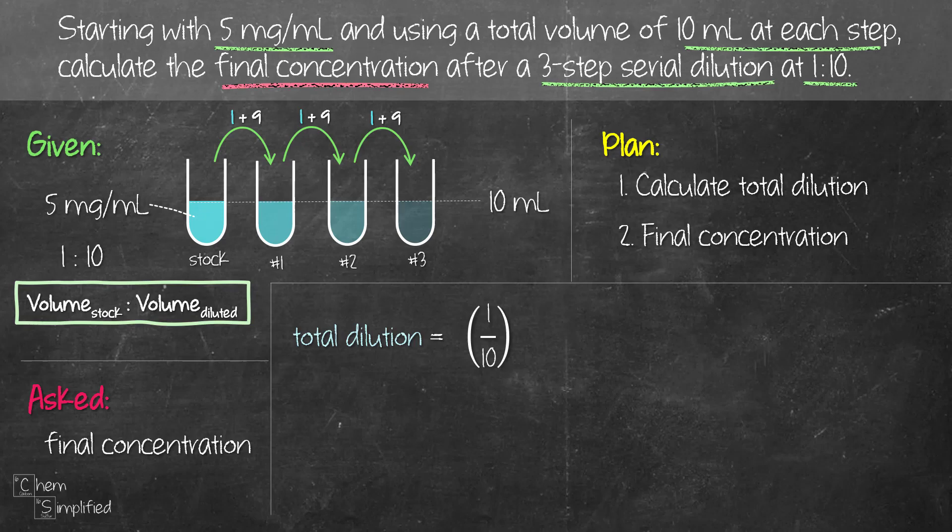Now in the second step we also did a 1 to 10 dilution, so we multiply by 1 to 10. And then in step 3 we also did another 1 to 10 dilution. So all in all we did three steps, so we have 1/10 times itself, and that gives us 1 over 1000. Basically you just take 1/10 times 1/10 times 1/10 and that gives us 1 over 1000. So that is actually a 1000-fold dilution.